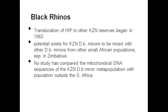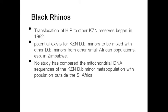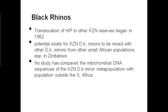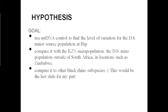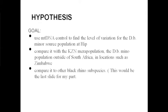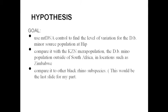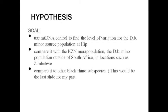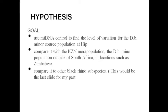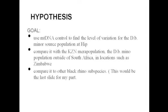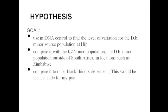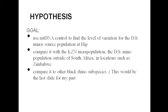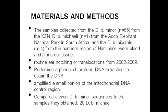No study has previously compared the mitochondrial DNA sequences of the KZN D. b. minor meta-populations, making this a first. The goal of the study is to examine mtDNA control region sequences to find levels of variation in the D. b. minor source population at HIP, compare it with KZN meta-populations, compare with populations outside South Africa such as Zimbabwe, and compare with other black rhino subspecies.